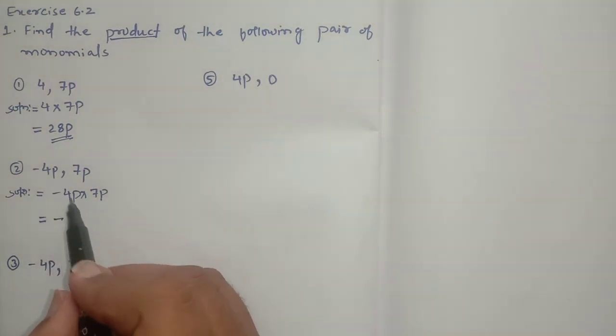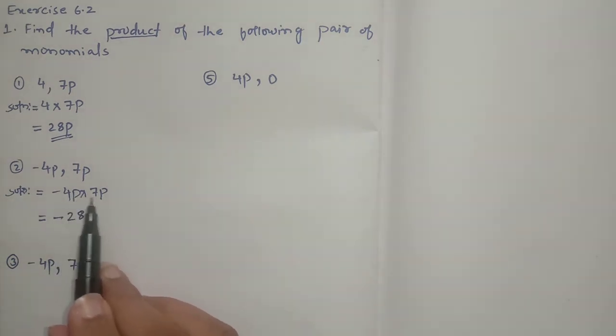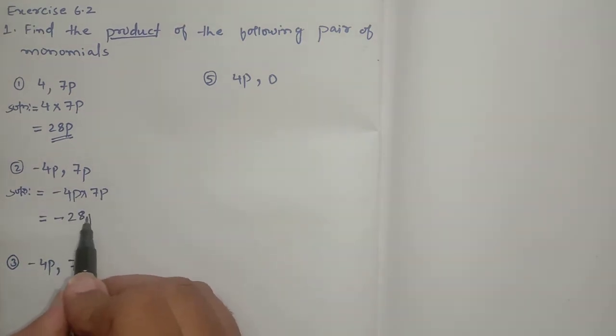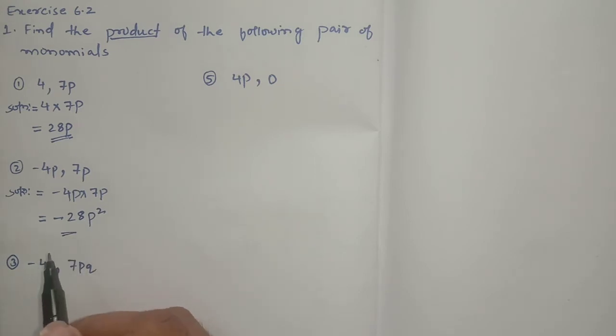Then multiply the numbers. 4 sevens are 28. Now multiply the variables. p into p is p squared. This is the answer.